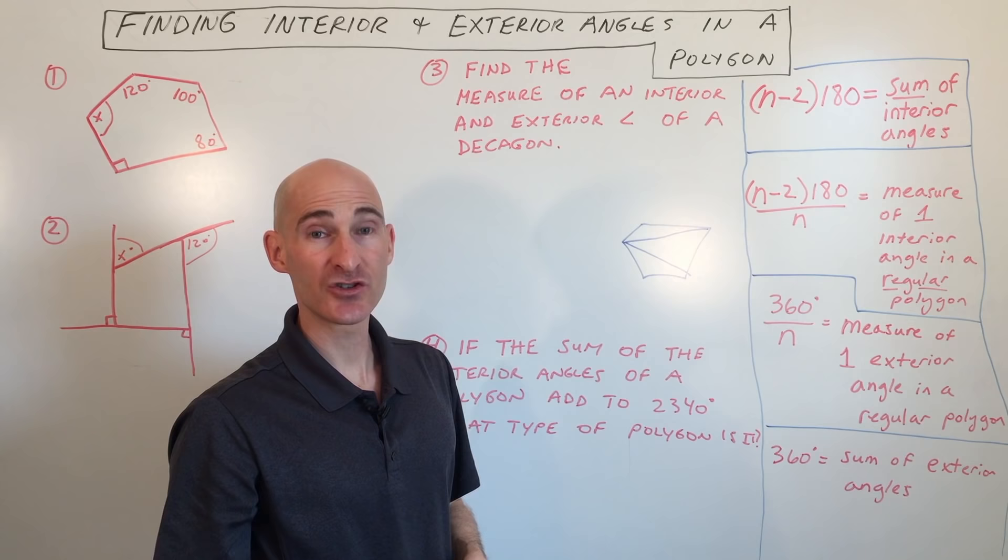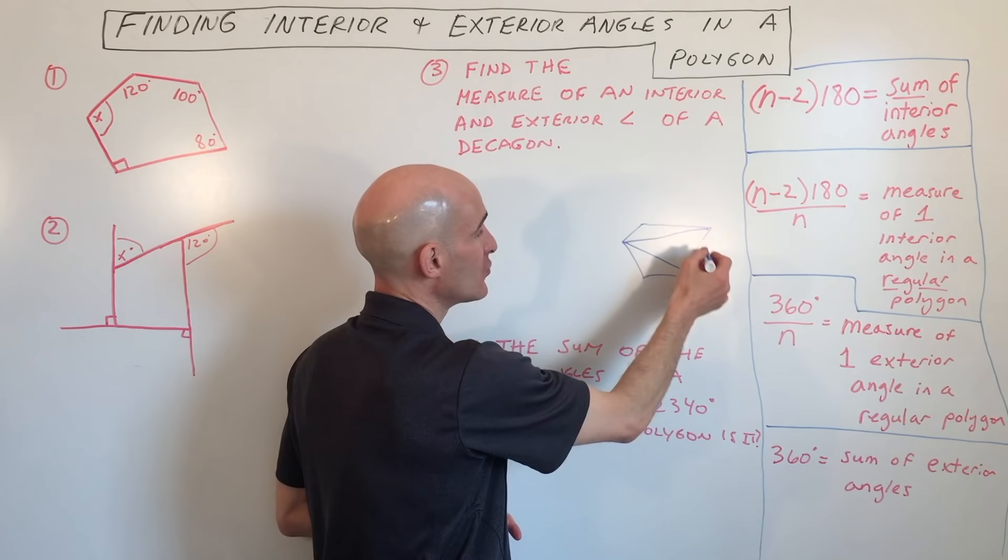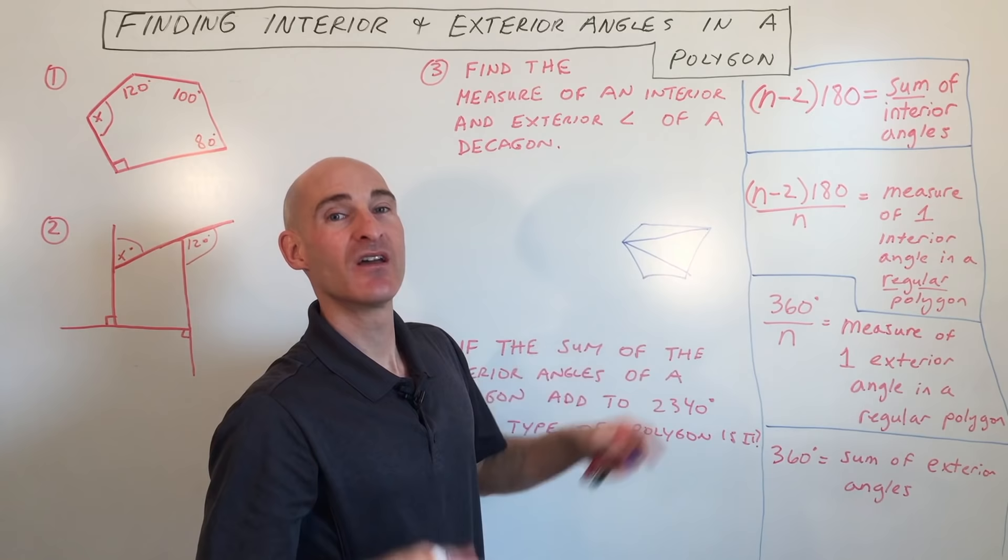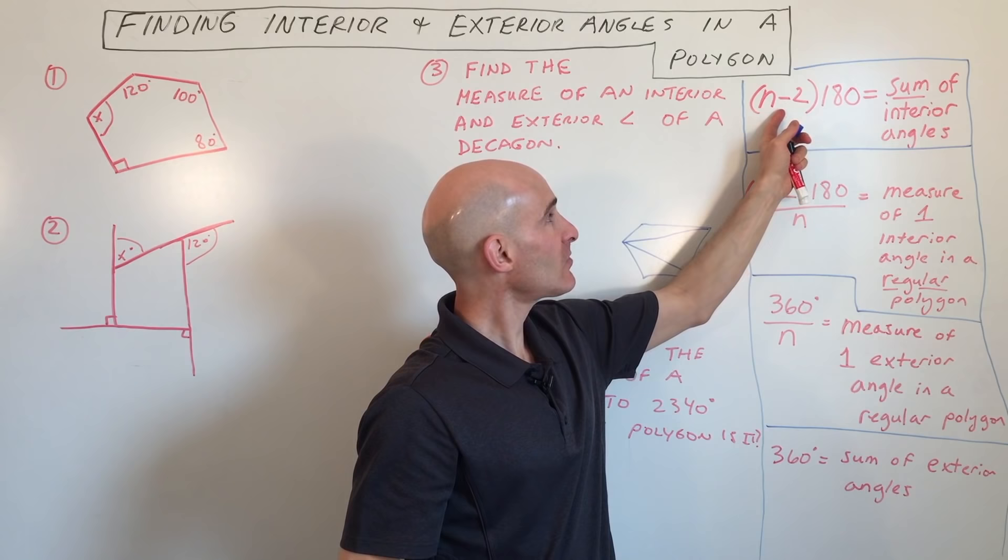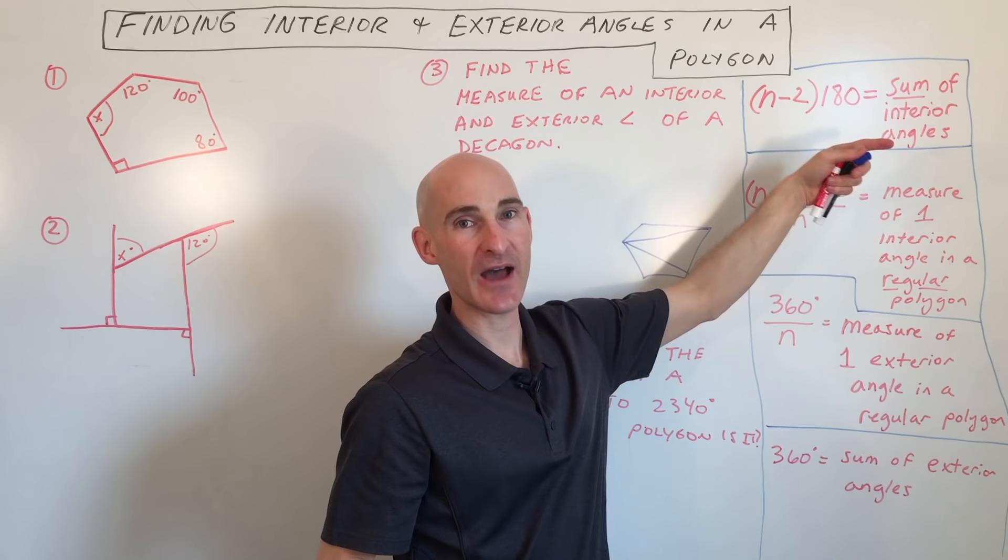This particular polygon I drew has one, two, three, four, five sides. Five minus two is three. And you can see there's three triangles there. So three times 180 equals 540. So that's where this formula comes into play, you're going to have two less triangles than the number of sides or angles that you have in the polygon.